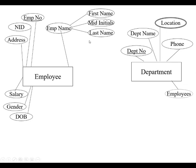You have an employee number which is underlined — this is a number you give the employee, and you know that number is correct because that's the one you assigned. Now the NID — the national identification number, which in the US would be the Social Security number — you don't want to use that as your index, because if it's wrong and it's linked to 20 other tables, it could be a nightmare to change.